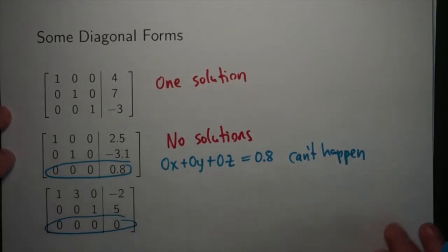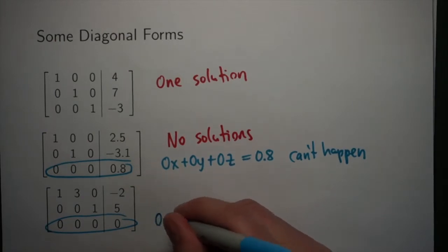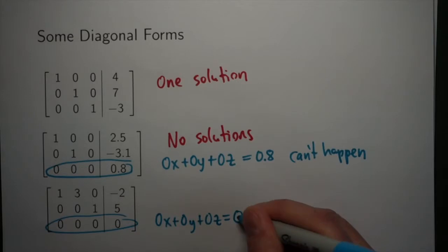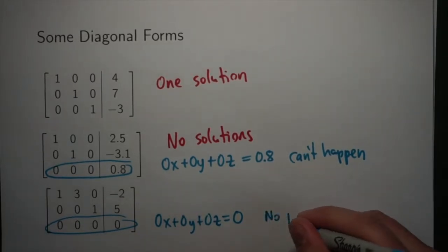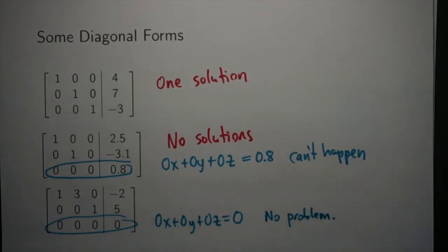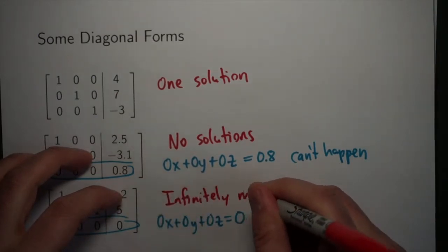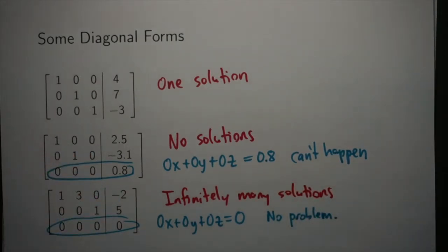It's also possible to end up in this last case, where we have a row of zeros, but on the other side of the line is also a zero. If I write this in terms of the variables, I get 0x plus 0y plus 0z has to equal 0, or 0 equals 0. There's no problem with this actually happening. So in this case, what we have is infinitely many solutions. Infinitely many means we can't write them all down, so we'll need a special form.